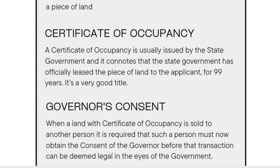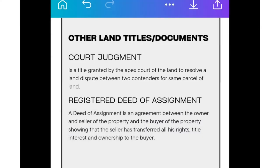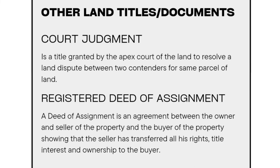So those are the major land titles in Nigeria. But there are other subtle land titles in Nigeria which you seldom hear of but are also very valid. For example, Court Judgment. A Court Judgment is a title granted by the Apex Court of the Land to resolve a land dispute between two contenders for the same parcel of land. Once the court decides who should take the land, the other party has 50 days to appeal. If after 50 days the other party does not appeal, the Court Judgment will stand and is also a very valid title once verified.